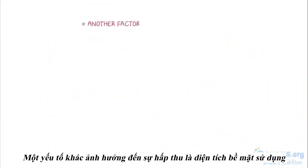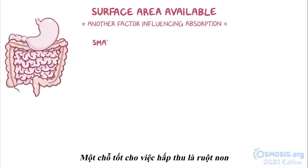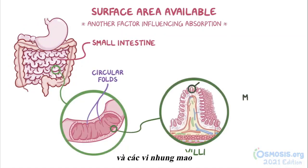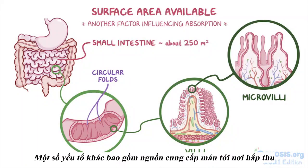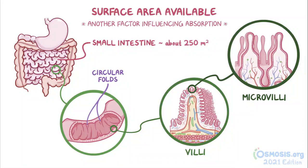Another factor influencing absorption is the surface area available. A good place for absorption is the small intestine. With its circular folds, villi, and microvilli, the total surface area is about 250 square meters — the size of a tennis court. Other factors also include the blood supply to the absorption site and the presence of food or other material in the gastrointestinal tract, which can either promote or inhibit absorption.